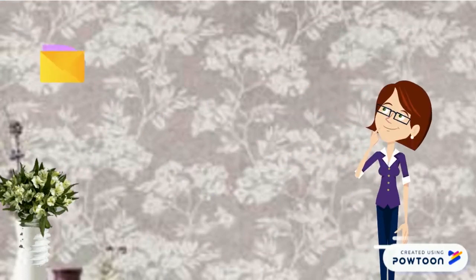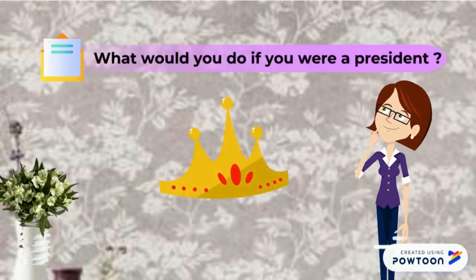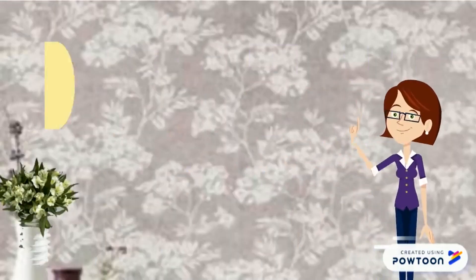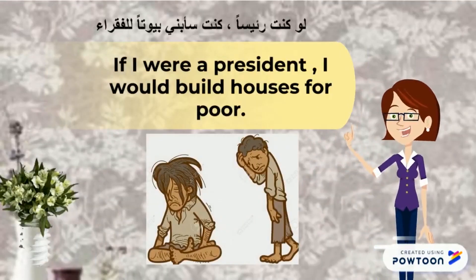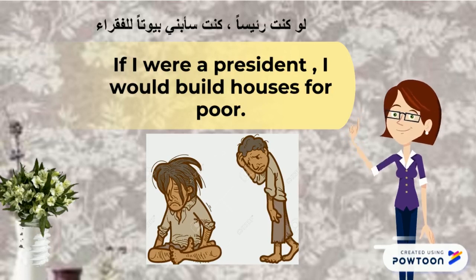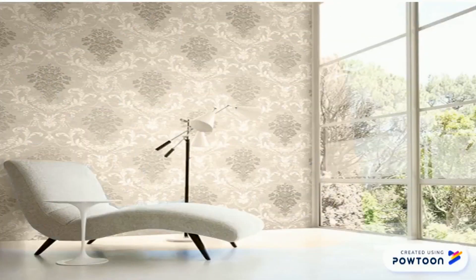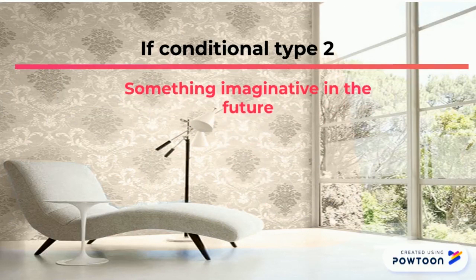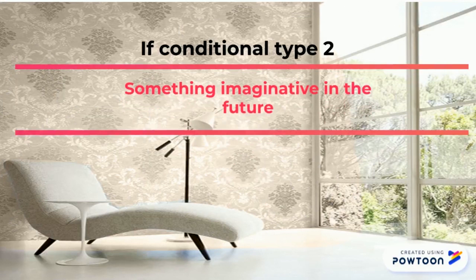What would you do if you were a president? If I were a president, I would build houses for the poor. Remember that conditional type 2 talks about something imaginative in the future.